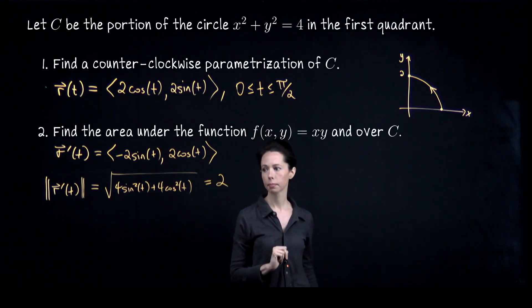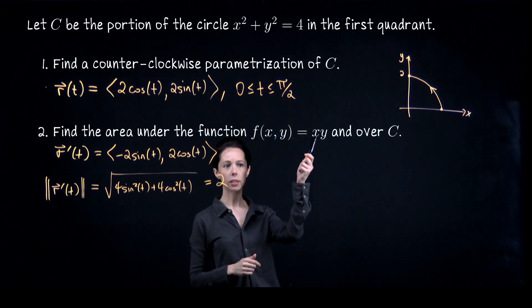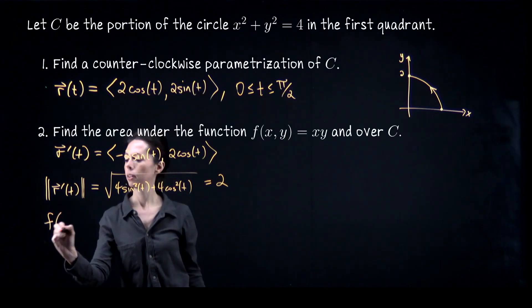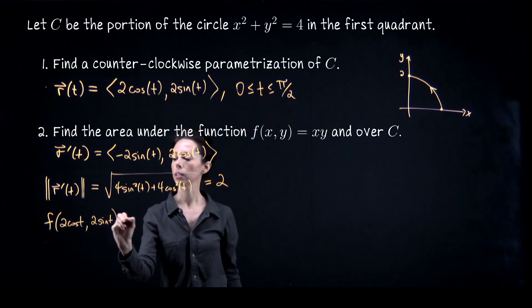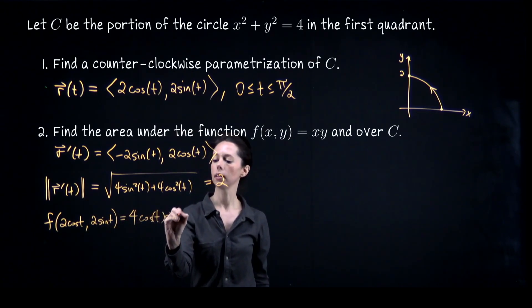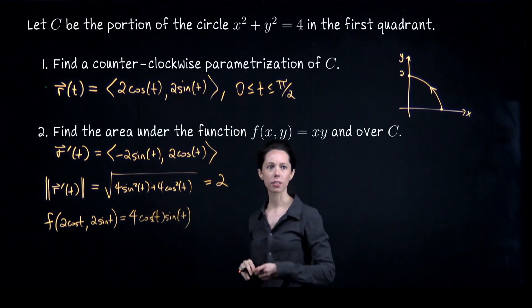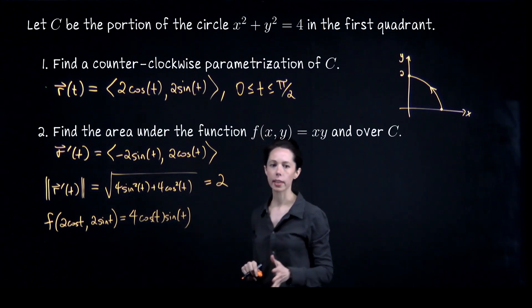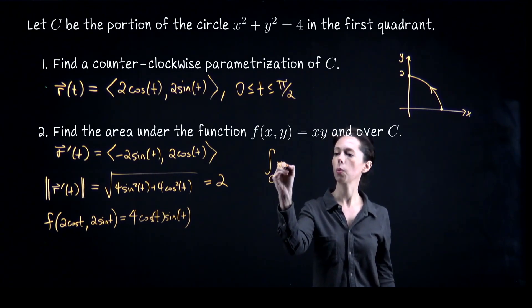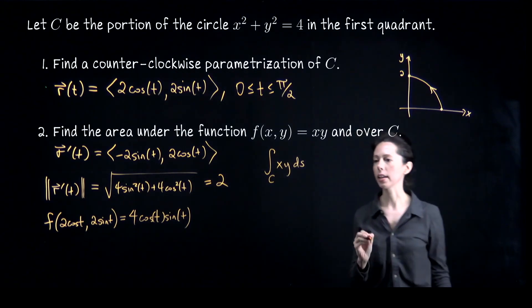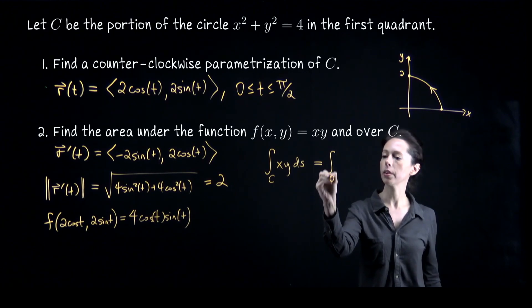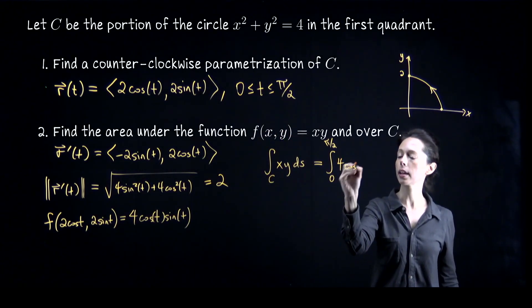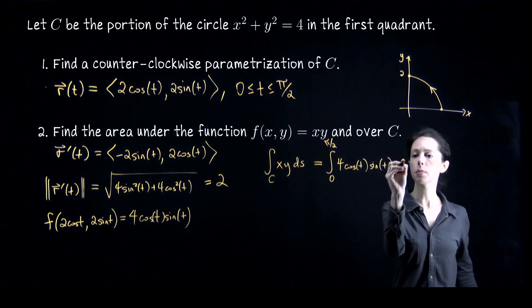Now we take f(x, y) = xy and substitute the parametric coordinates: x = 2cos t, y = 2sin t. So f(2cos t, 2sin t) = 4cos t · sin t. We have everything we need. The bounds on our parametrization become bounds of integration. The scalar line integral ∫_C xy ds equals the integral from 0 to π/2 of 4cos t · sin t times the speed 2, then dt.